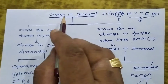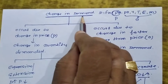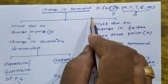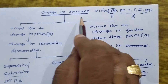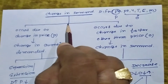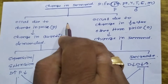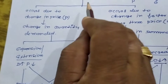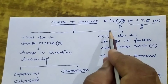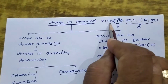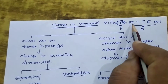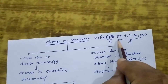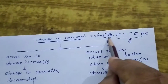Dear students, today I will discuss change in demand with the help of a flow chart. I will discuss this flow chart in the video class as well as in the live class also, so understand it properly. Till now we have discussed that demand is a function of PM, PR, Y, T, E, N. You are aware of all these terms.